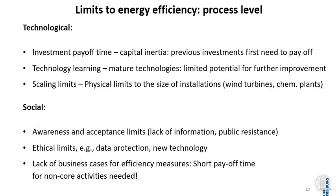On the social side, we have three limits. The first is awareness and acceptance. Customers or industry agents may simply not be aware that certain technologies already exist and are actually economic. But even when awareness exists, there may be acceptance limits — public resistance, ethical considerations, or perceived fear of negative impacts. For example, people may have to leave their homes for a new hydro dam, or land values decrease because high-voltage transmission lines are planned. These issues can affect the acceptance of new projects and thus the overall efficiency of the grid.